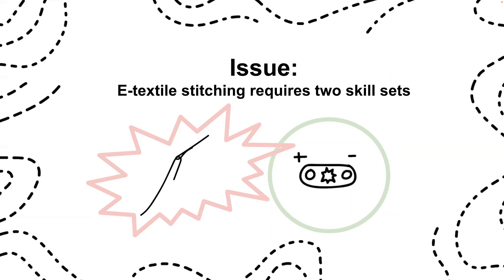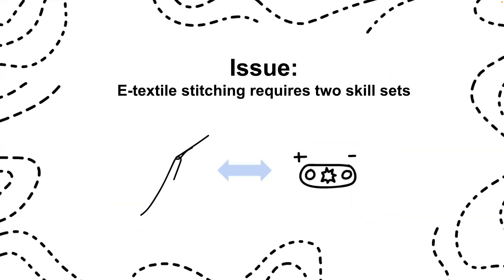For example, if someone makes a stitch design with components in the correct location and polarity orientation but makes loose stitches and therefore loose connections, the design will fail. So in this work we try to explore how to integrate these two skill sets, and do so by looking to how textile stitching techniques are taught and honing in on the design artifact of stitch samplers.